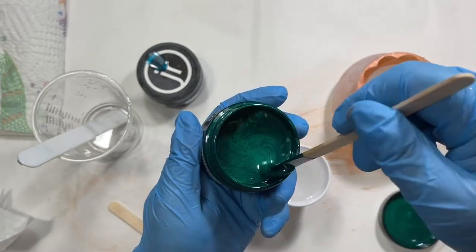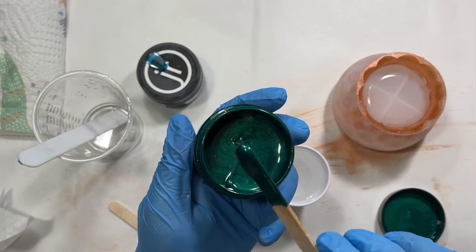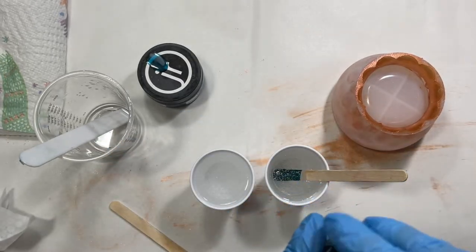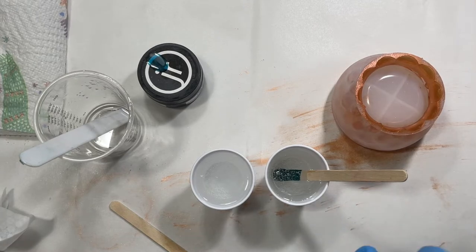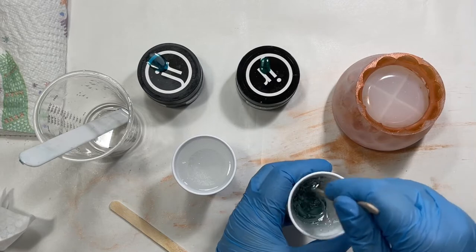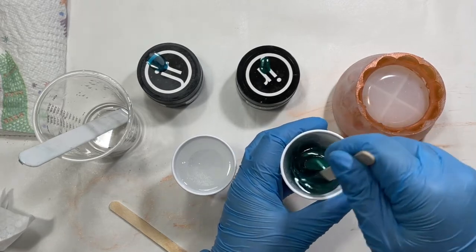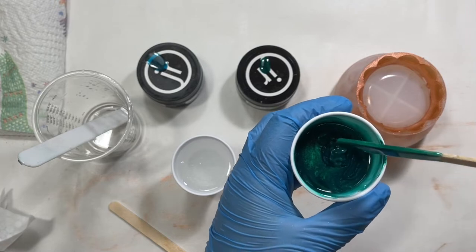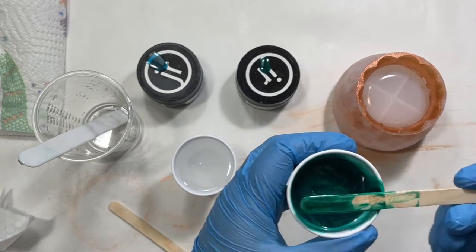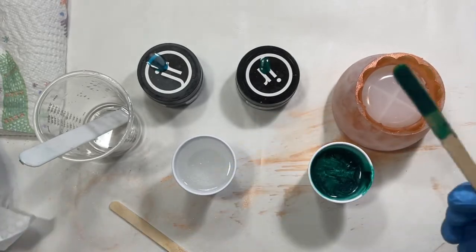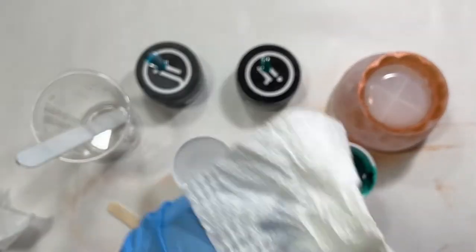I'm just going to scoop out about that much, we'll start with that. I want these colors to be really rich and opaque, so if I need to add more I will. It's just a little too translucent, almost opaque but not quite, so I'm going to add a little more color.